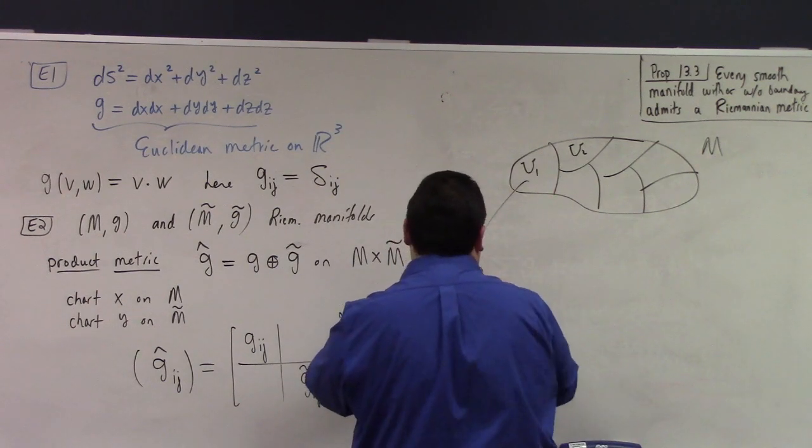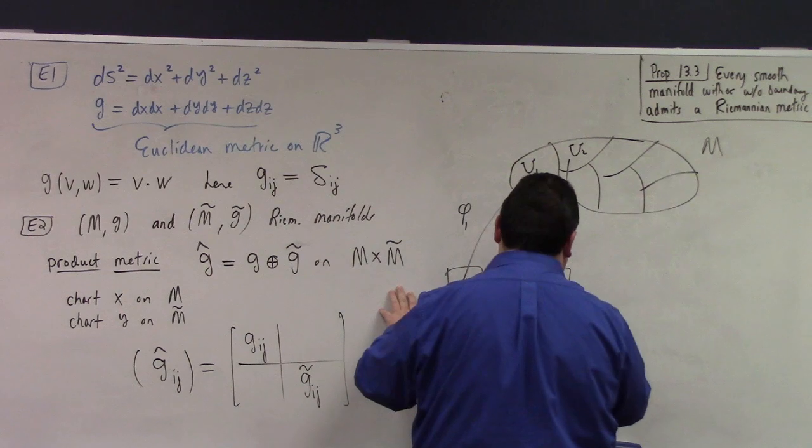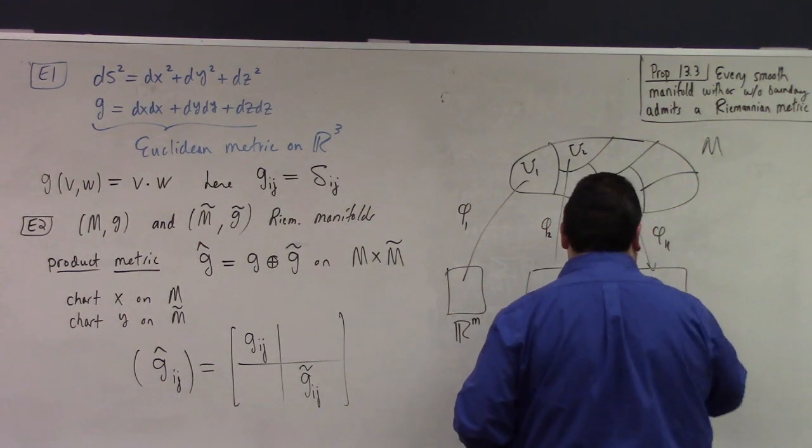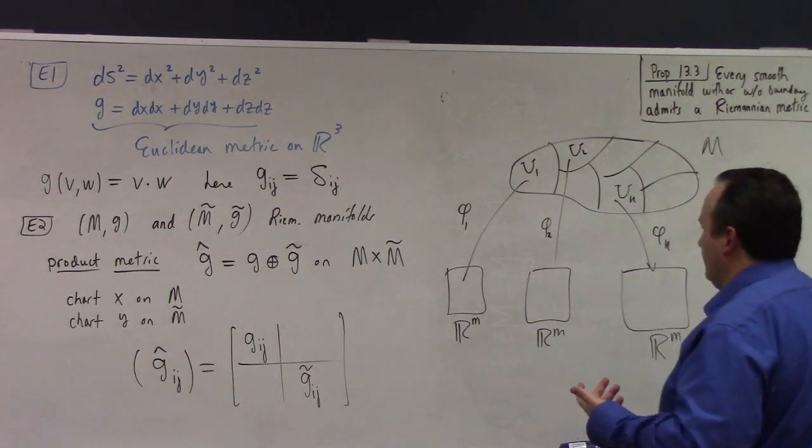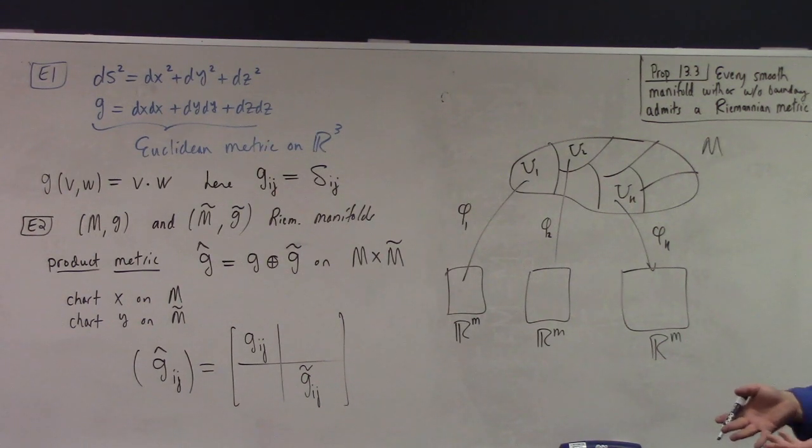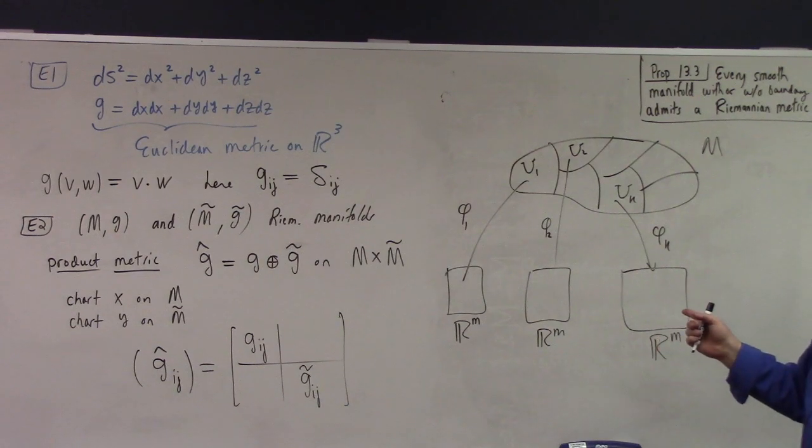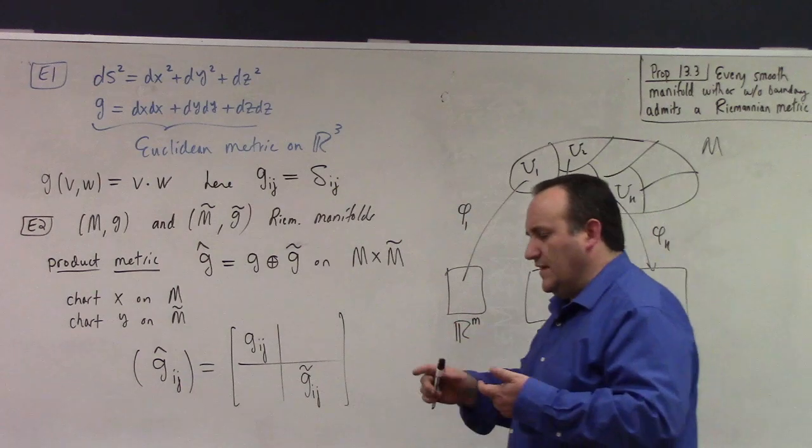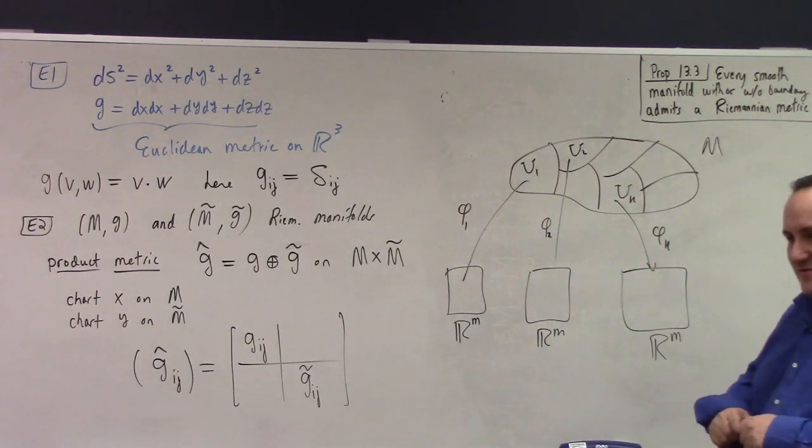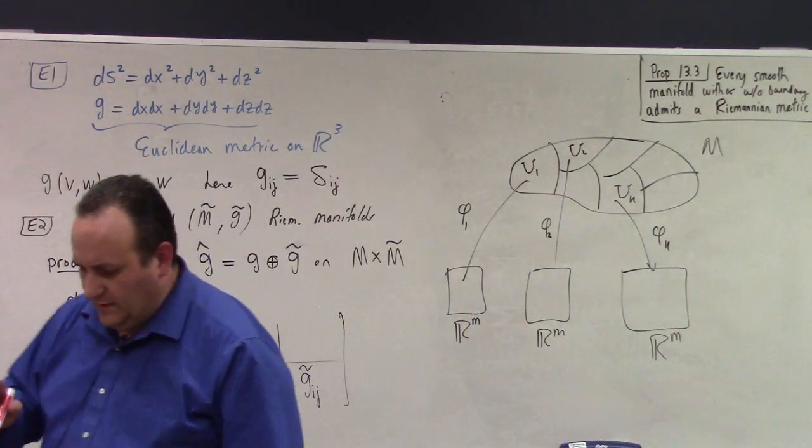I'll write some key ideas. Draw a picture here. Maybe it'll make more sense. So you've got the manifold. All right? And it's chopped up, possibly overlapping, but I'll just draw them like they're not. Chart domains, right? Like U1, U2, et cetera. All right? And those, they're coordinate maps. Let's say phi1 down here to R^m. So UK, phiK, R^m. Okay?